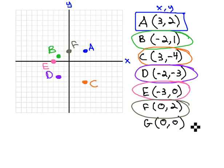Our final point is point G at 0, 0. 0 to the left and 0 to the right gives us point G in the middle, on the origin.